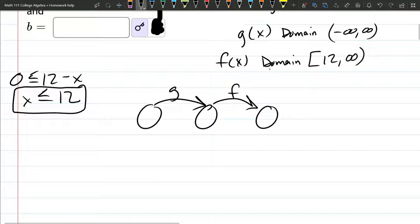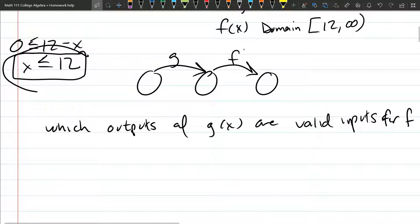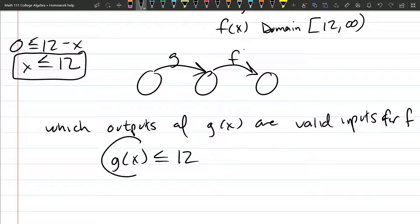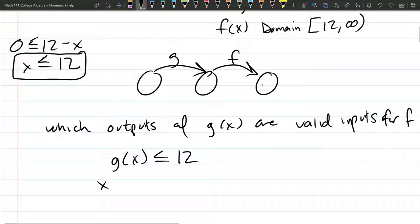So we need to find which outputs of g of x are valid inputs for f. And one way to think about it, the inputs for f all need to be less than or equal to 12. So you could just solve this inequality. The outputs for the g function are less than or equal to 12. And the g function is x squared minus x, less than or equal to 12. So that's the inequality we have to solve.